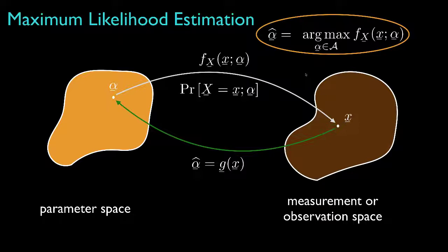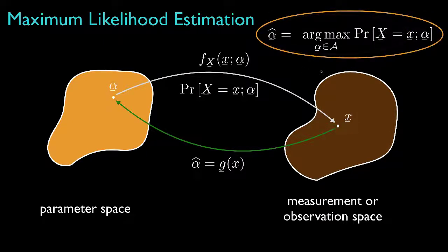For maximum likelihood estimation, we search for the parameter that makes the probability density largest for a continuous-valued observation, or the probability mass function largest for a discrete-valued observation. In either situation, we are in essence trying to find the parameter that creates a statistical model for which the observation we make is the most likely to have occurred.